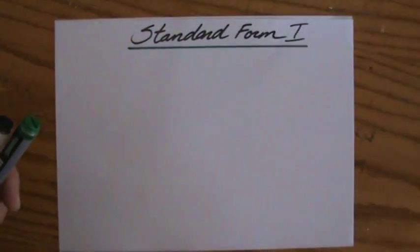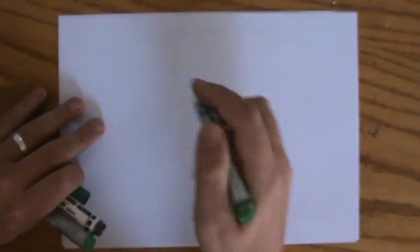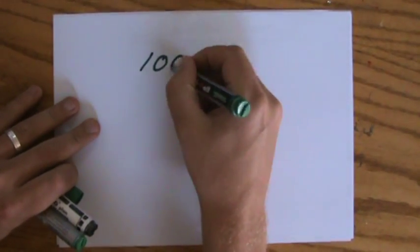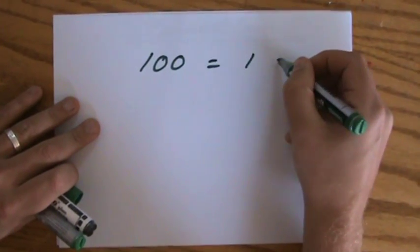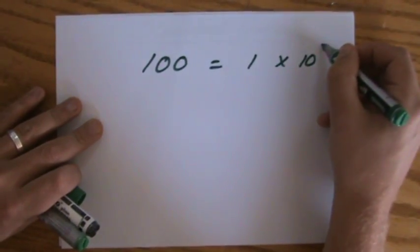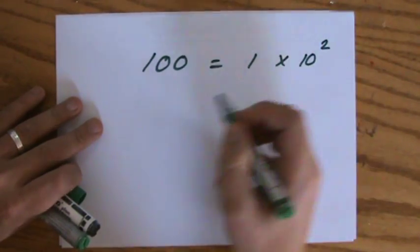Just very briefly, I'd like to say the following. You should realize that, for instance, the number 100, which of course is not super big, but that is the same as 1 times 10 to the power 2. That is actually already the standard form.